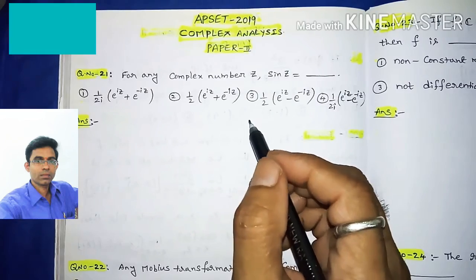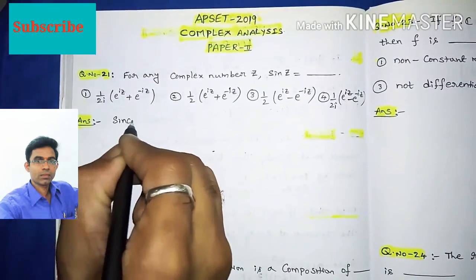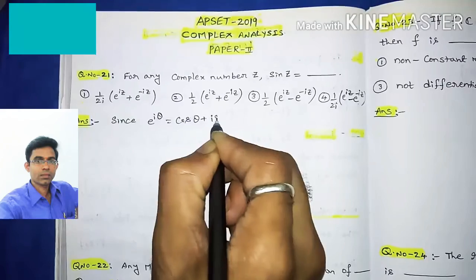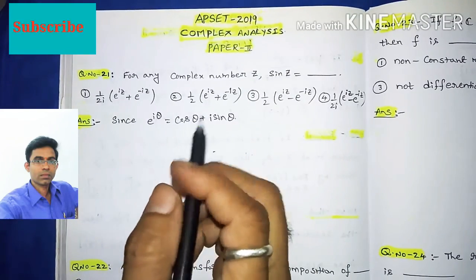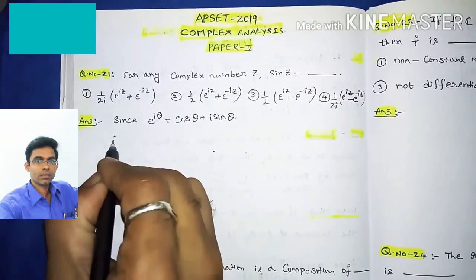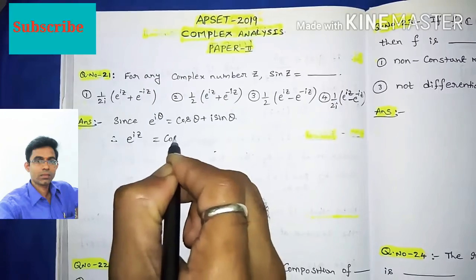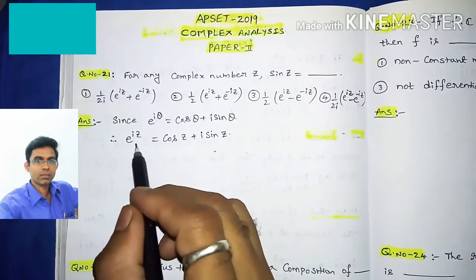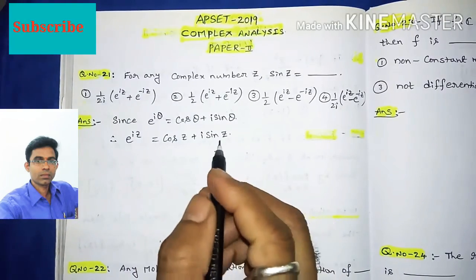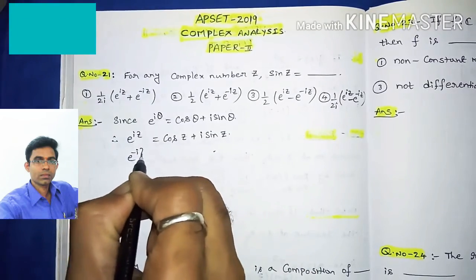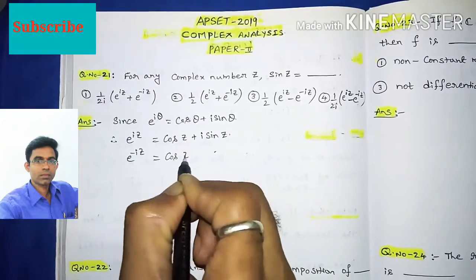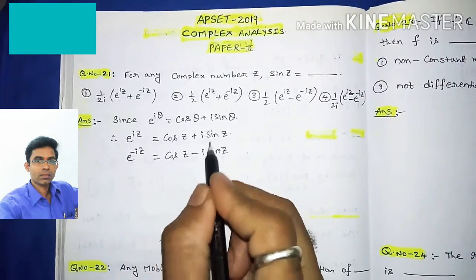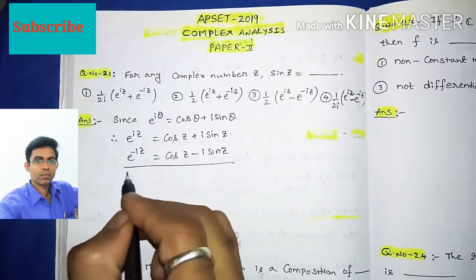We know that e^(iθ) = cos θ + i·sin θ. So e^(iz) = cos z + i·sin z, and similarly e^(-iz) = cos z - i·sin z.